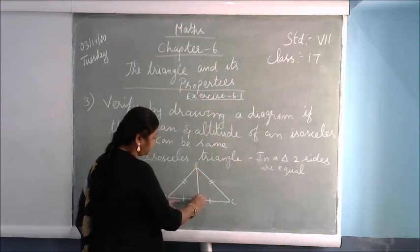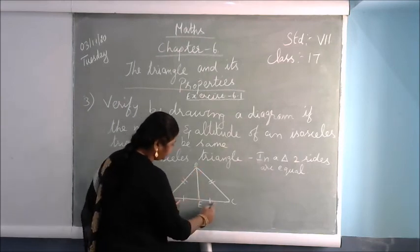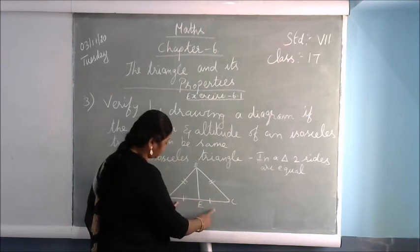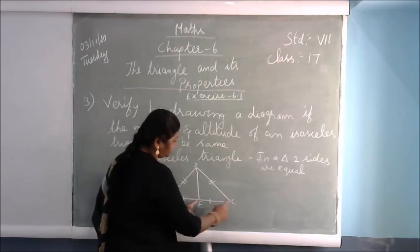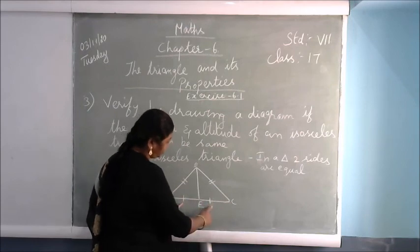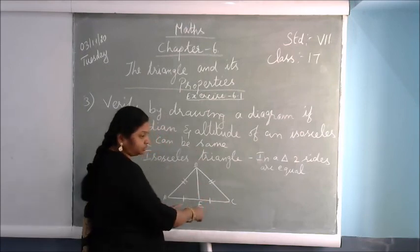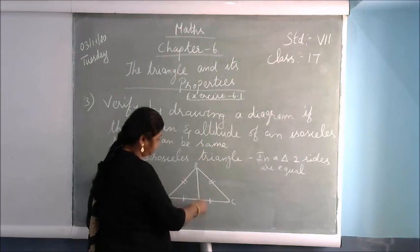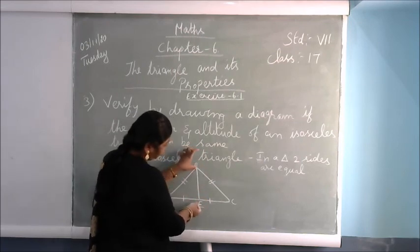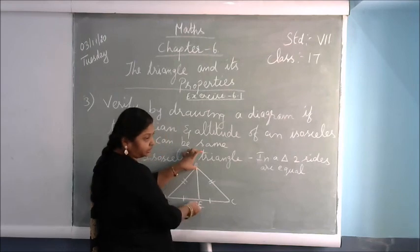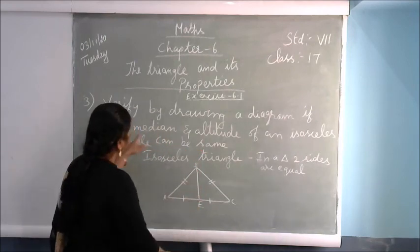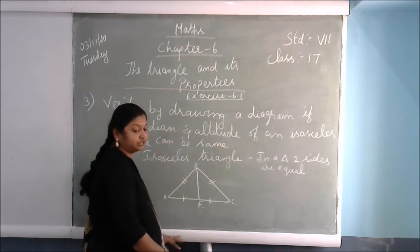In this isosceles triangle, you put one line segment from the top vertex to the base. That line segment divides the base into two equal parts — AE equals EC. If you take the altitude from the same point, it lands at the same spot. So the altitude and median are the same in an isosceles triangle.